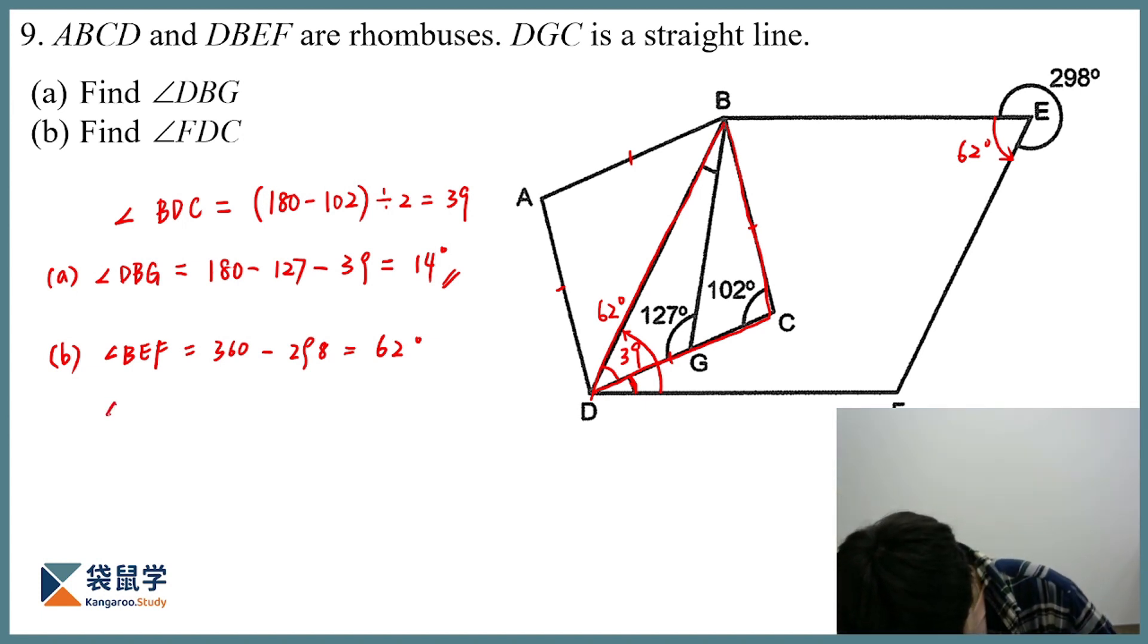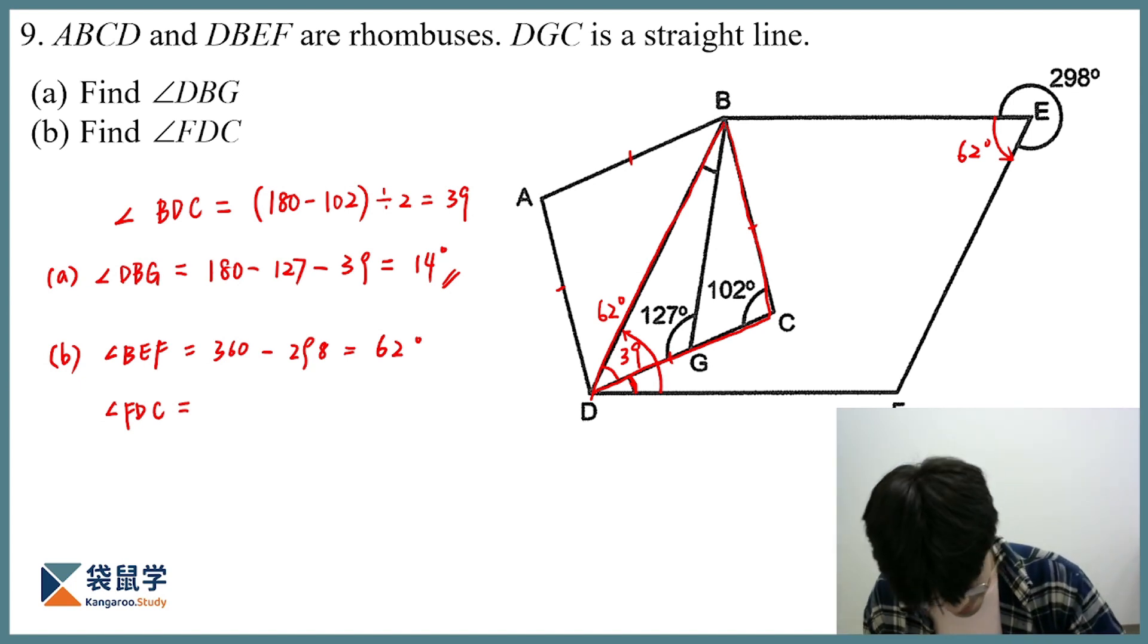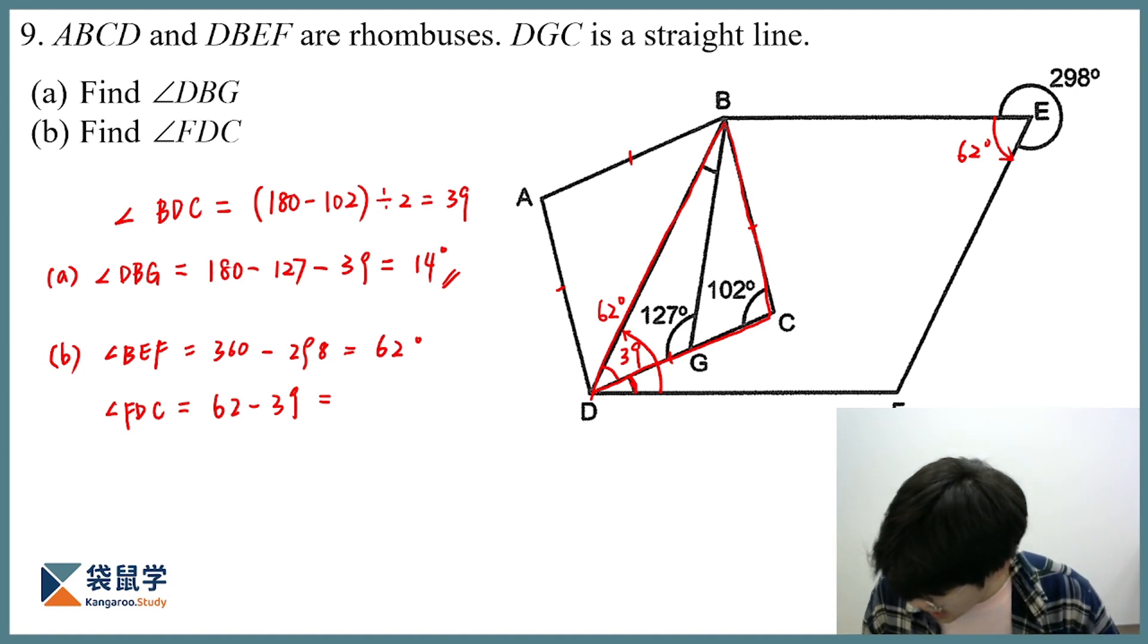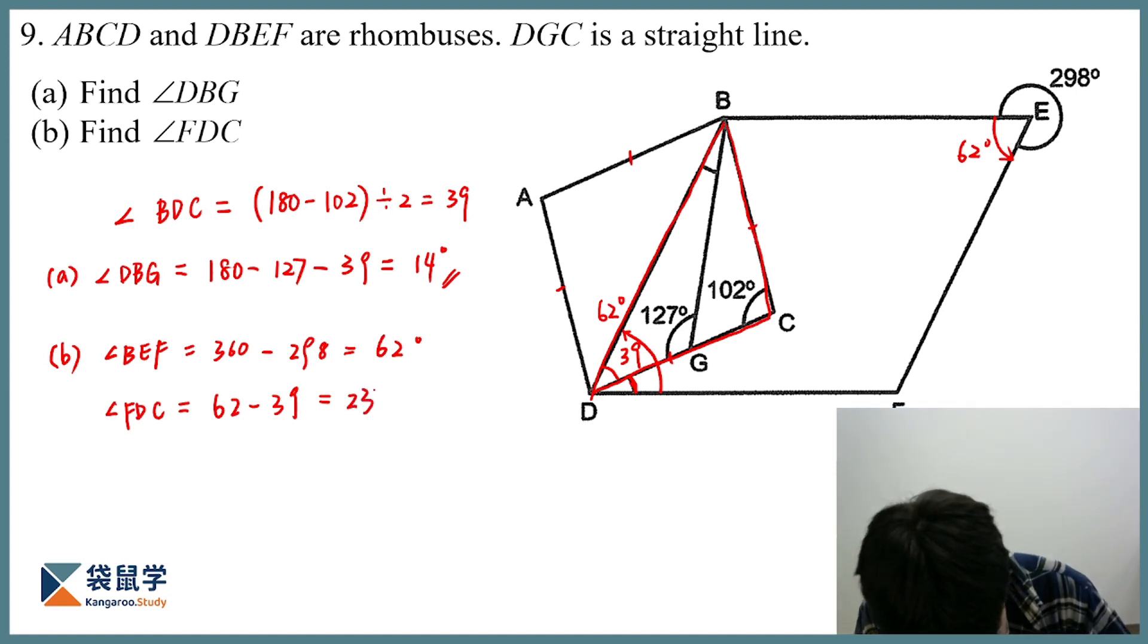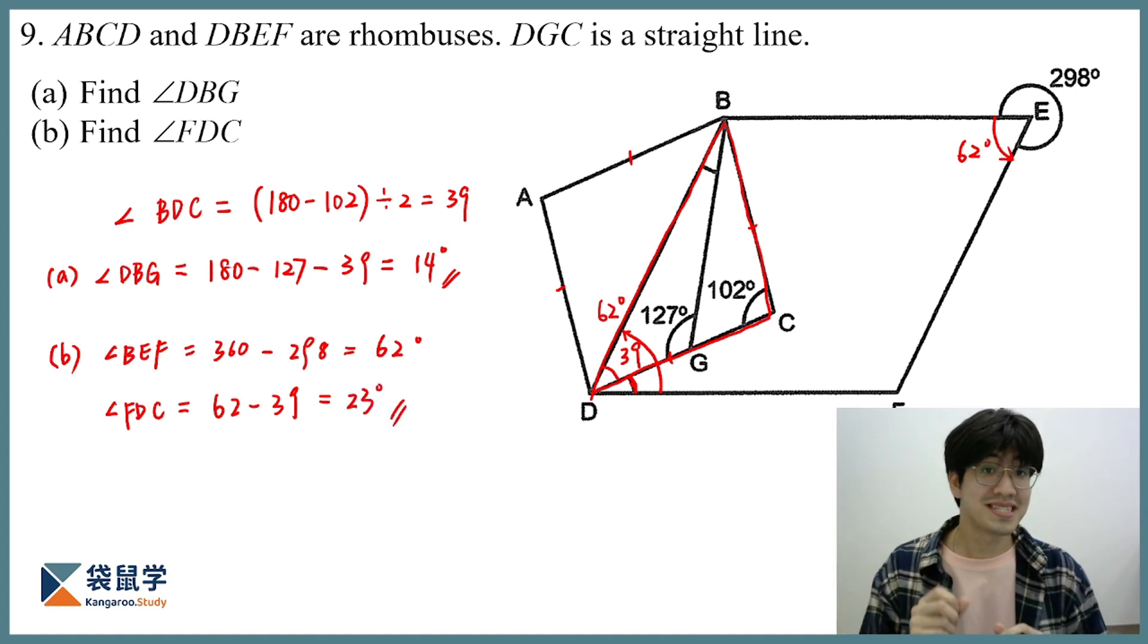Now, for FDC, this is simply 62 minus 39 that we have just found, which gives me the answer, 23 degrees. So, that solves the second part.